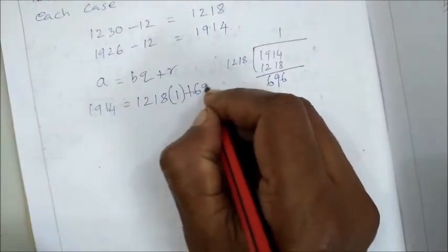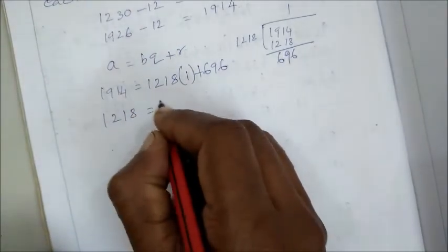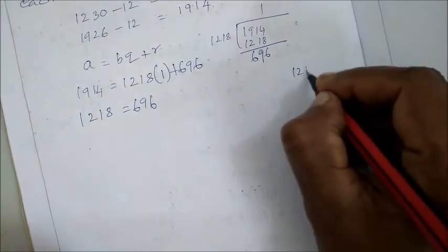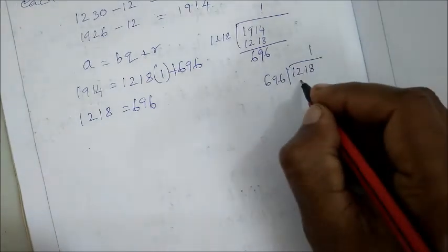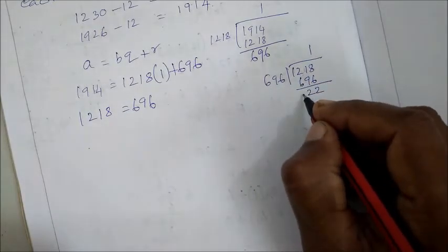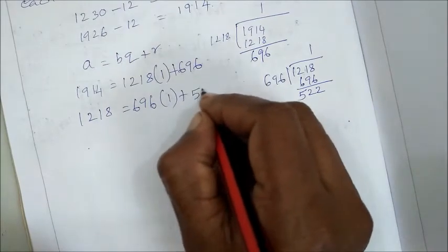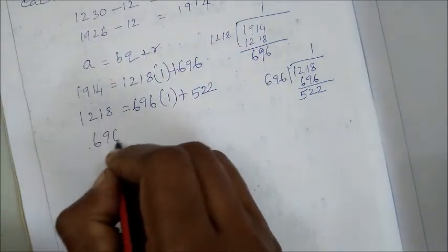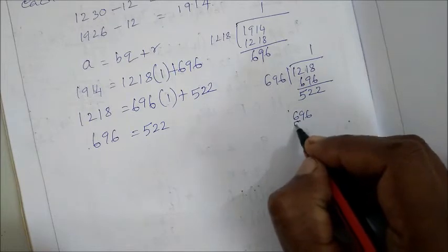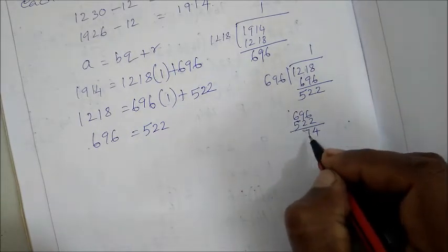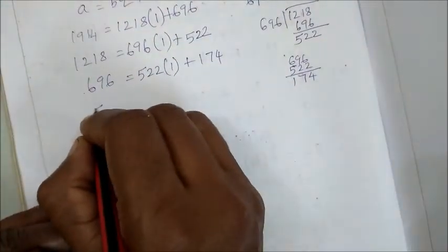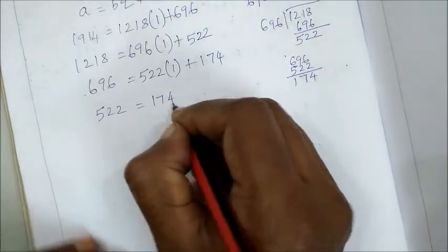Next, 1218 equals 696 times 1 plus 522. Then 696 equals 522 times 1 plus 174. Continuing: 522 equals 174 times 3 plus 0.